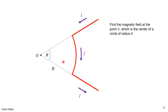The question asks: what is the magnetic field at the origin, at the center of this arc of the circle? The radial lines extend from the origin outward to infinity, and the arc of the circle has its center point O. We want the magnetic field at point O due to the whole wire.